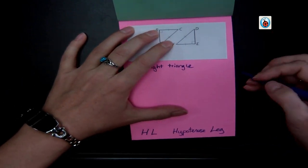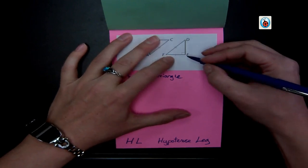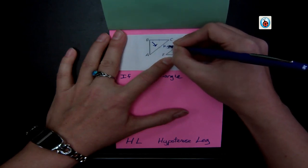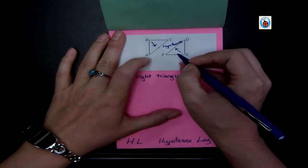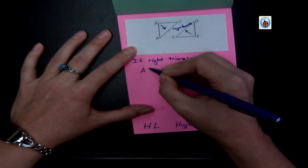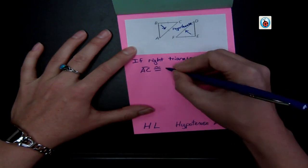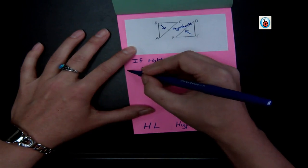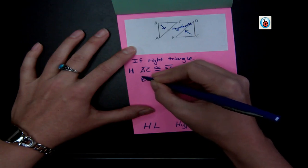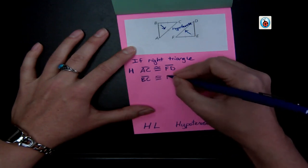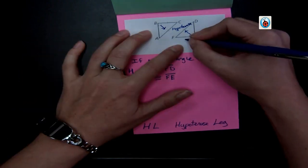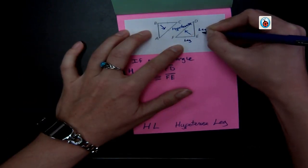The hypotenuse is what's opposite to the right angle. That's called hypotenuse. Okay, and then the leg is any other side. So if we have a right triangle, then we can mark our AC is congruent to FD, and that's our hypotenuse for both of them. It's across from that right angle. And then BC is congruent to FE, which is the leg. So leg is either of these sides that is touching the right angle. Those are both called legs.